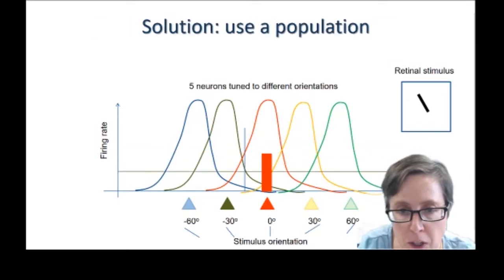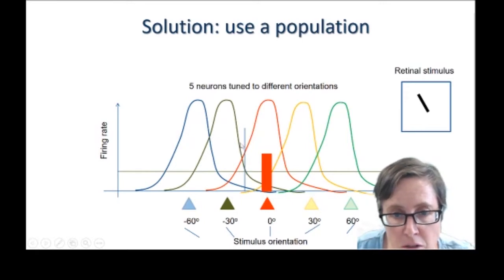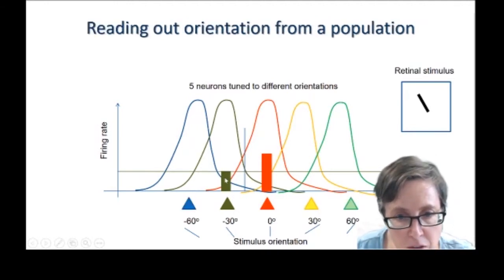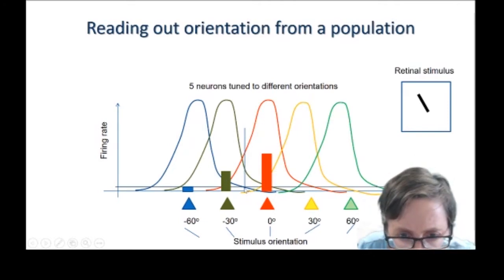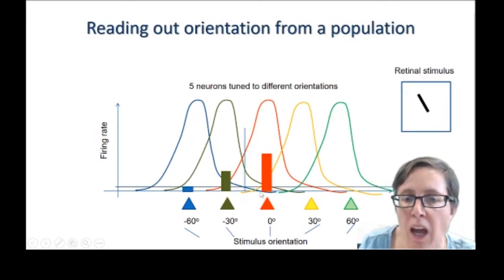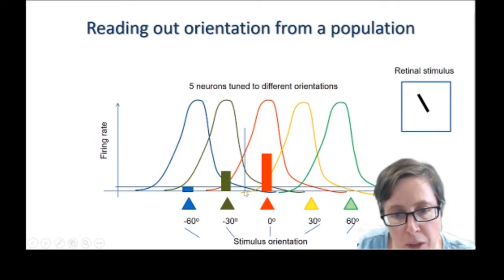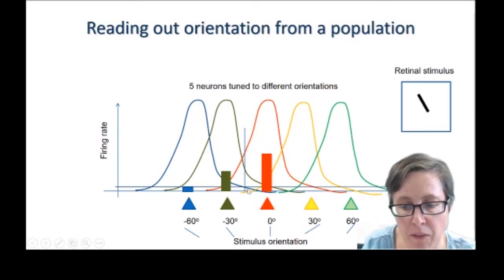So I'm going to mark on where the green neuron is responding. So that's the height of the green tuning curve at this minus 15 degrees, and that gives me the firing rate of the green neuron. And I can do that for the blue neuron. We'll just get a very little response there. And the yellow and the other green neuron, the light green neuron, are not responding at all because their orientation tuning curves have already fallen to zero at this point.